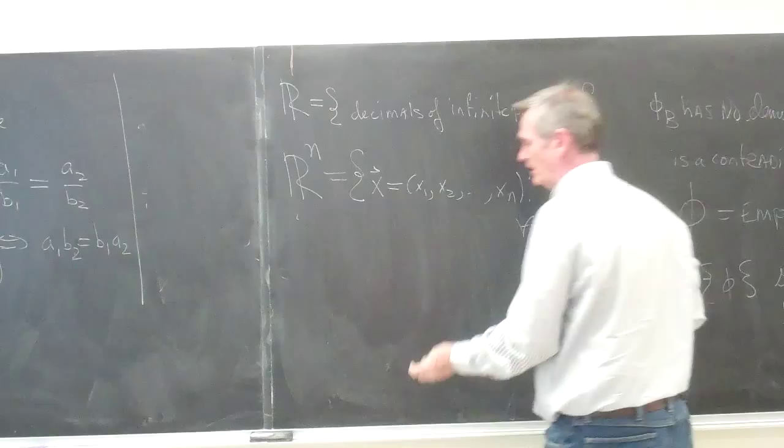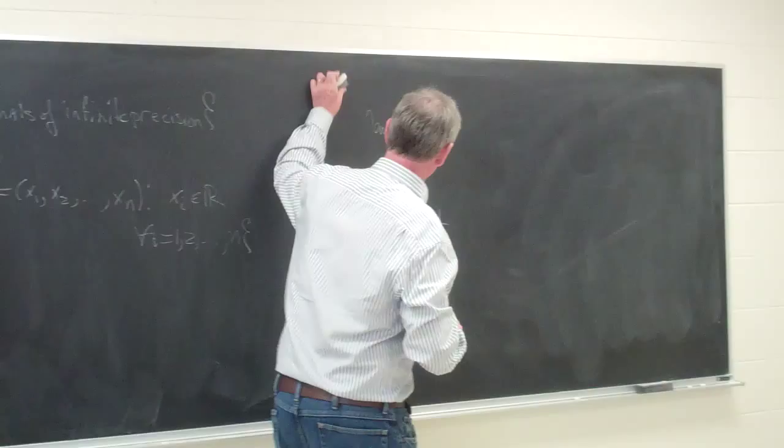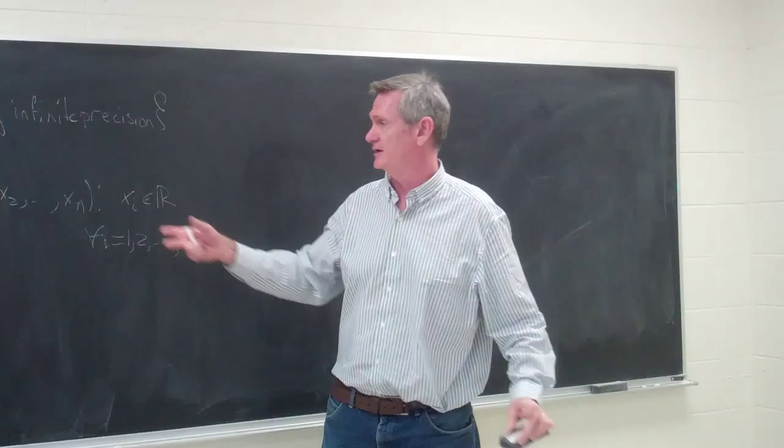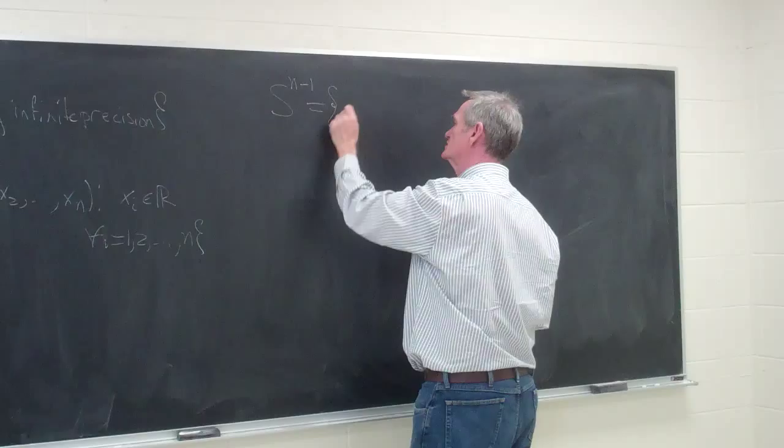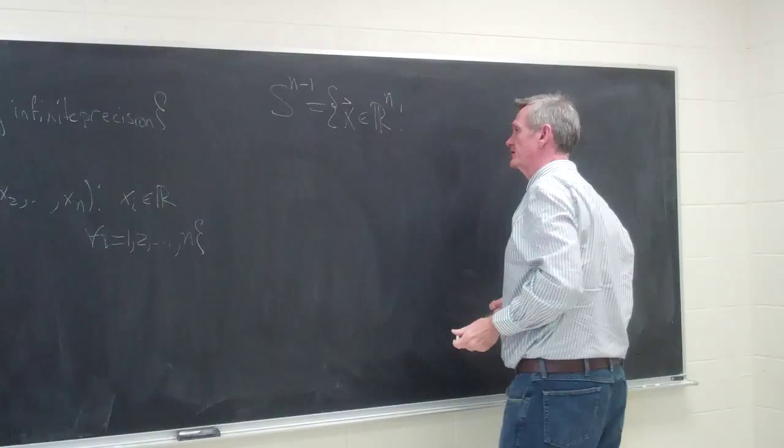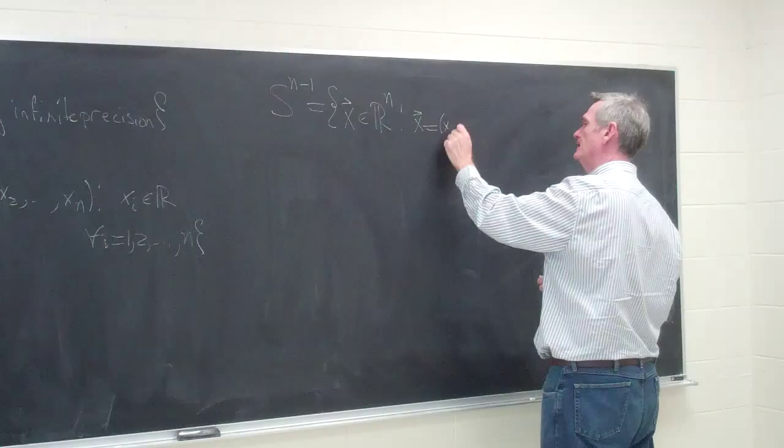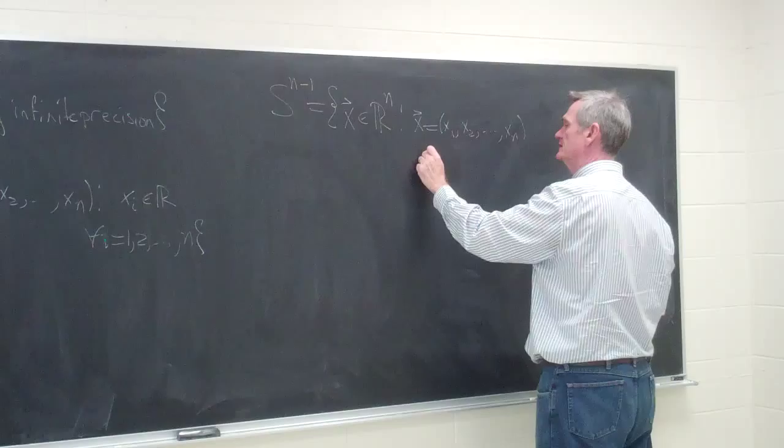Inside Rn, we have lots of nice subspaces. In fact, many, although not all, but many of the topological spaces that we'll be dealing with are going to be subsets of Rn. In particular, we have the n-minus-1 dimensional sphere, which is the set of all x in Rn, vectors x in Rn such that, well, since it's in Rn, it's x1, x2 up through xn.